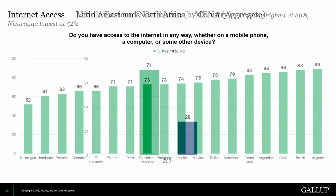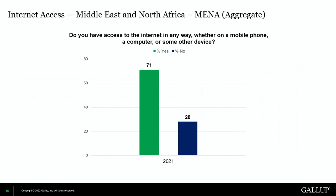The next region is MENA — Middle East and North Africa. The aggregate shows 71% with access, and 28% that don't. I also want you to keep in mind as I show you these slides that there is a difference between access, connectivity, and freedom of use. So as you think about all these issues and graphics, keep that in mind.